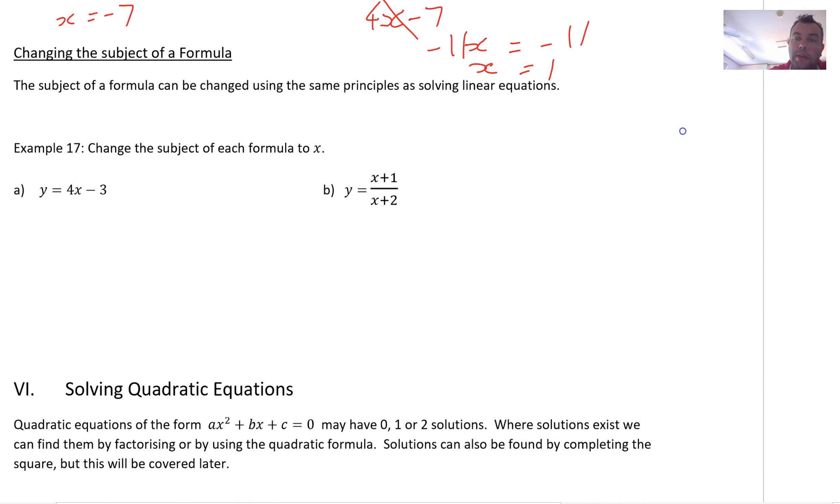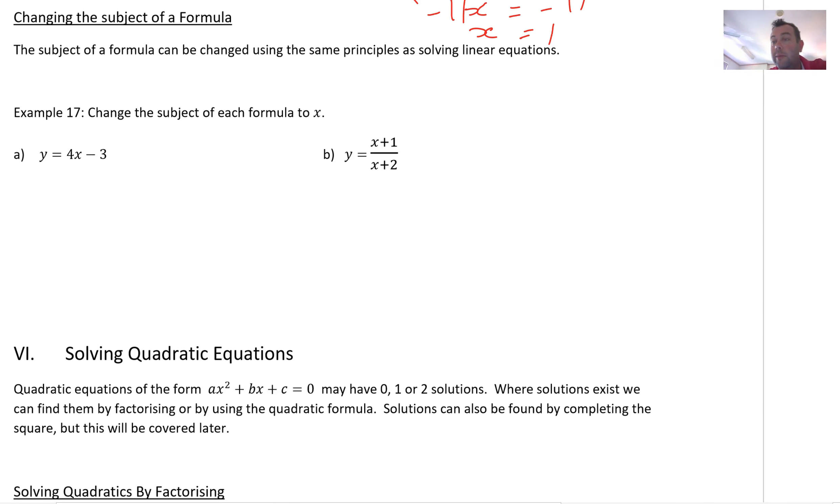Changing the subject of the formula is not really that dissimilar an operation. All this means, though, is we won't get a constant for an answer. I'm going to solve it with relation to whatever it tells me. Make the subject, I want x to be the subject, then I solve it for x. The difference is, my answer isn't going to be a constant, like 1 or negative 7 or something. My answer is going to have some pronumerals in it.